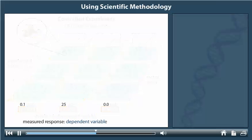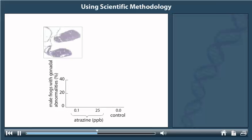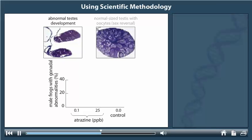The investigators found abnormalities in the reproductive systems of some of the male frogs. The abnormalities were of two sorts. First, some testes were abnormally small, with retarded development compared to normal-sized testes. Second, in a kind of sex reversal, some testes actually contained eggs, or oocytes.